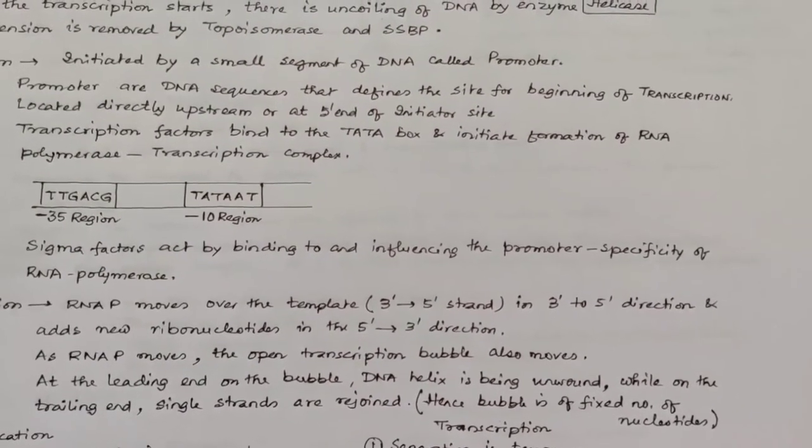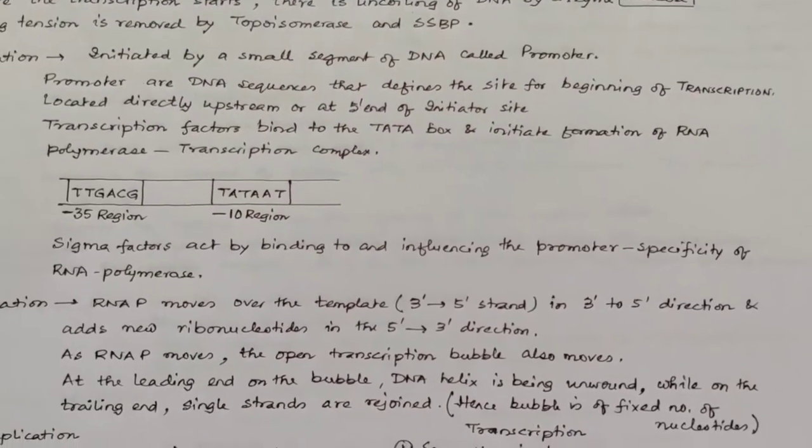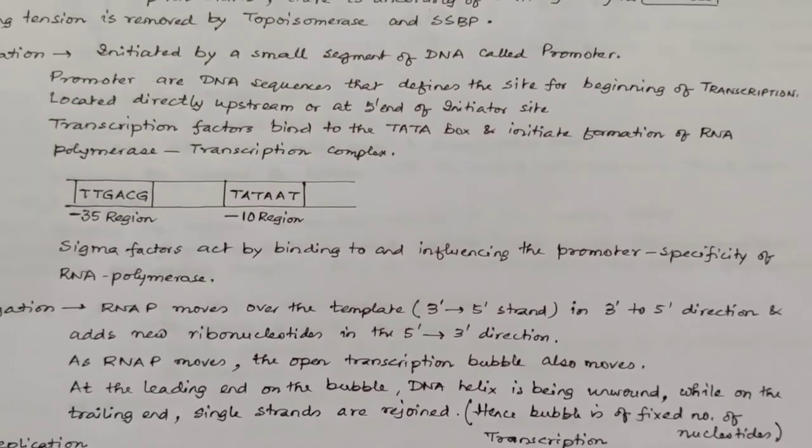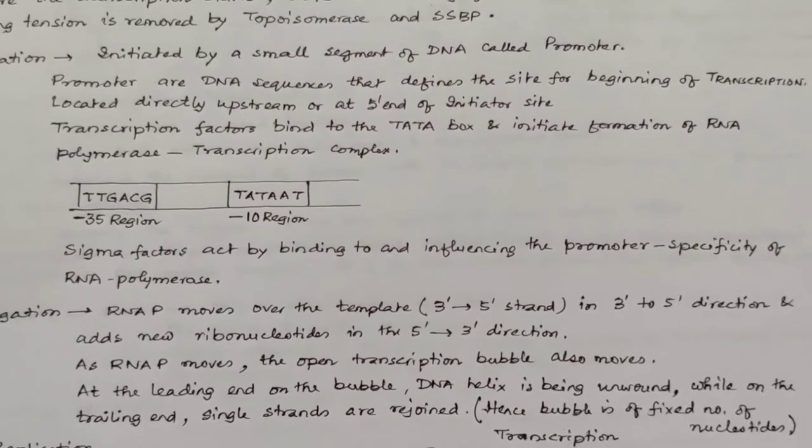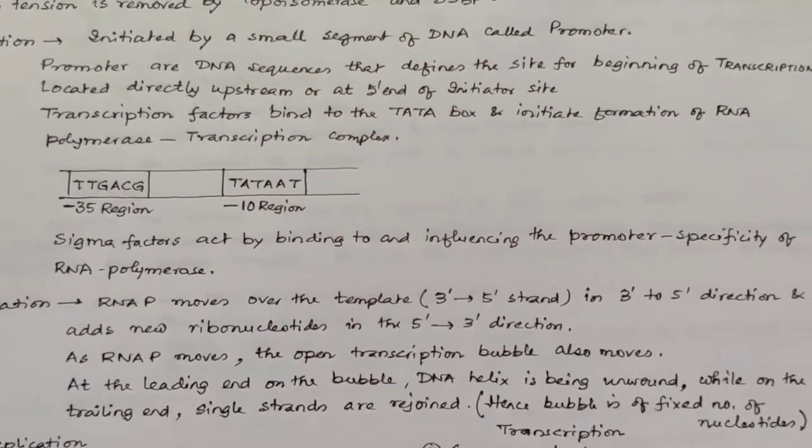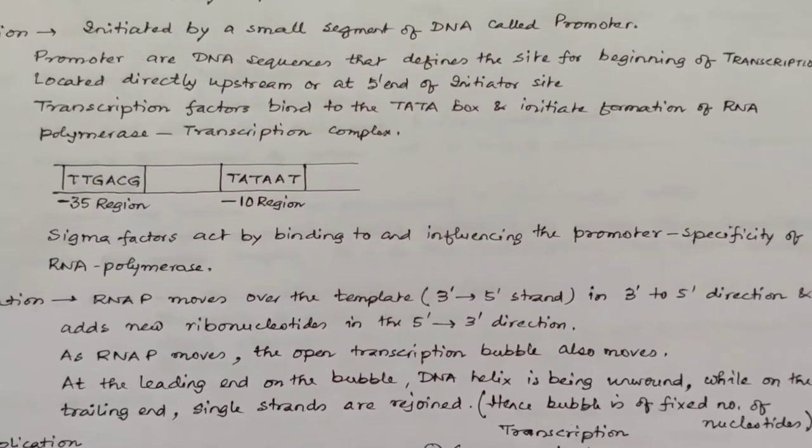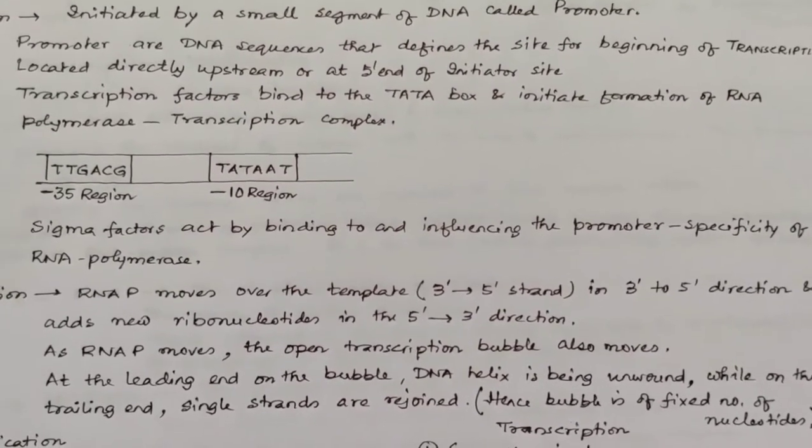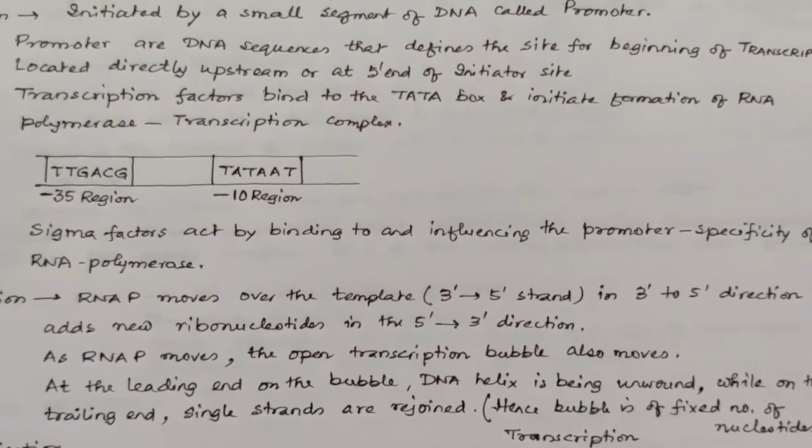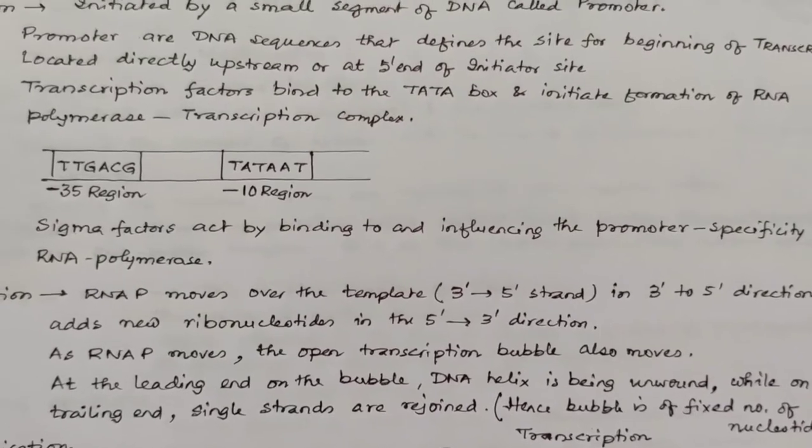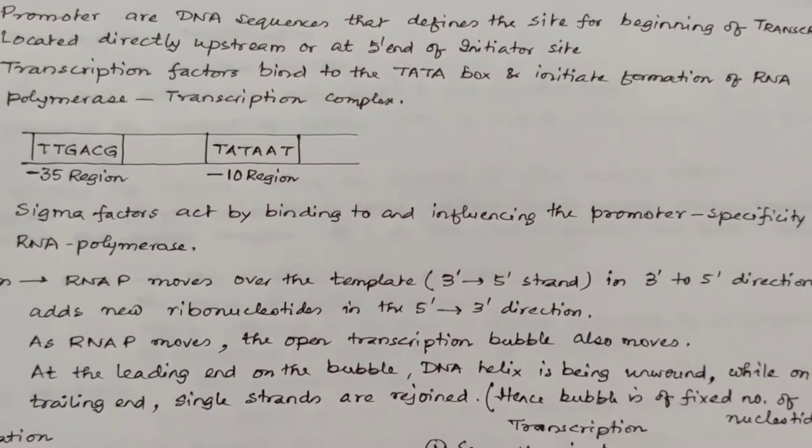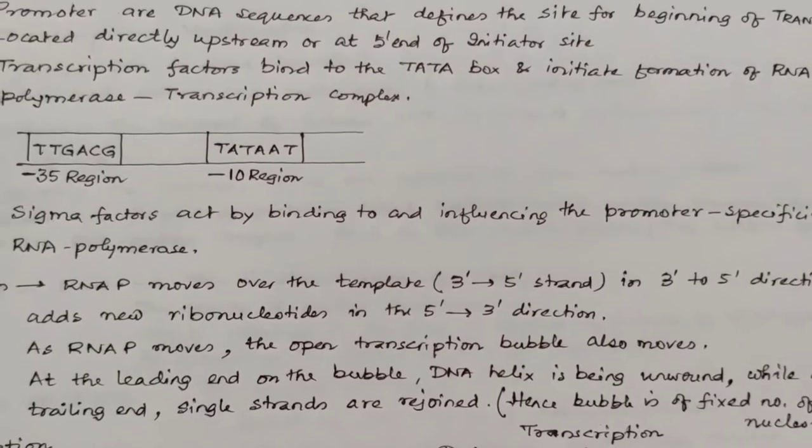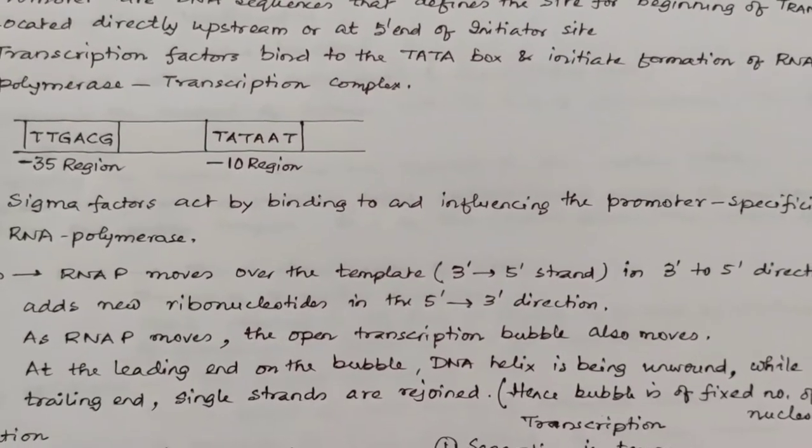If you consider the difference between replication and transcription, in replication, the separation of DNA helix is permanent, whereas in transcription, the separation is just temporary. The second point is, in replication, bases of newly formed DNA are attached to the DNA template, whereas in transcription, the 5' tail end of RNA chain is separate from DNA. We have to remember that synthesis of mRNA always occurs in 5' to 3' direction.